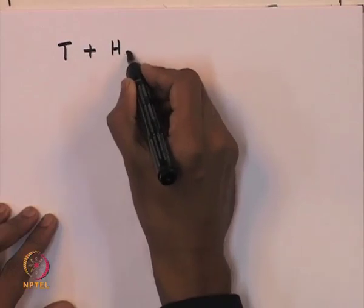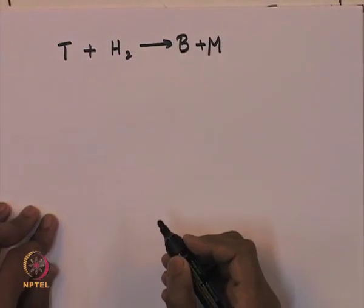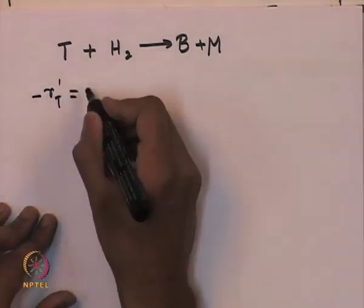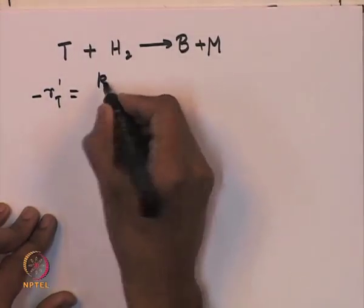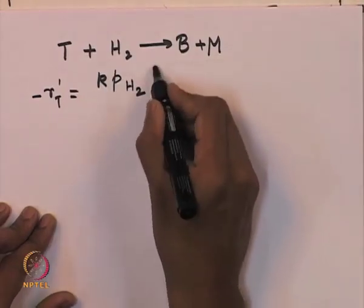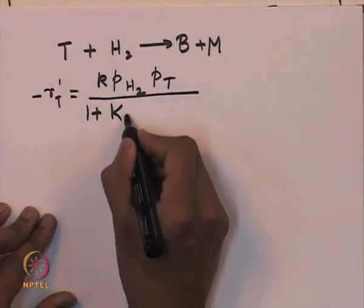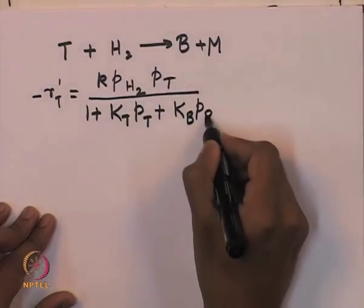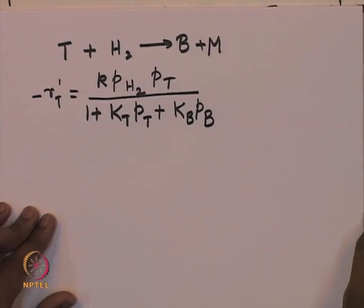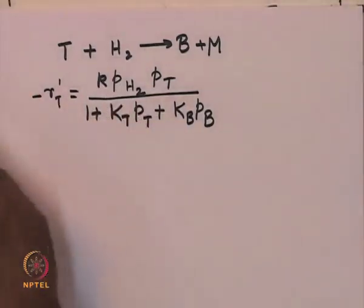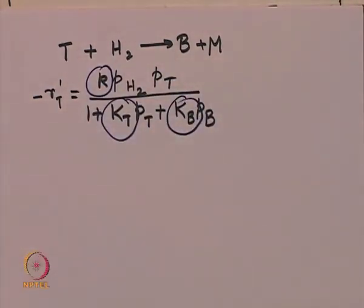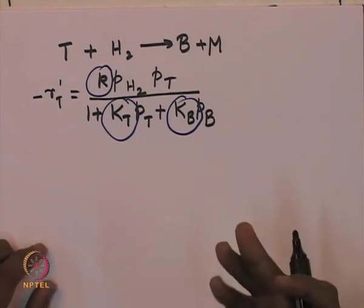We found that for toluene reacting with hydrogen to form benzene and methane, the rate of consumption of toluene can be written as a rate constant k multiplied by the partial pressure of hydrogen multiplied by the partial pressure of toluene, divided by 1 plus the adsorption constant for benzene. We then used experimental data to perform linear regression analysis and estimate the parameters k, kT, and kB.